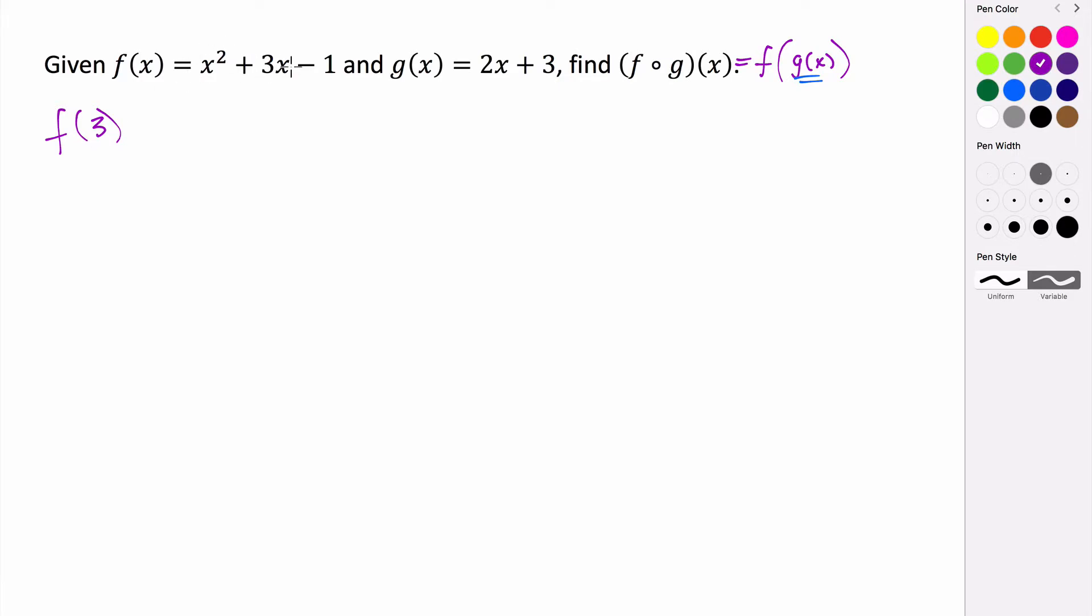But instead of f being evaluated at 3, we're going to actually evaluate it at the function of g of x. So g of x is going to be the entire input into our function. So we're going to take 2x plus 3 and plug it into f of x. So 2x plus 3 is now the input of our function. So anywhere that we saw x in f, it's going to be replaced by 2x plus 3.